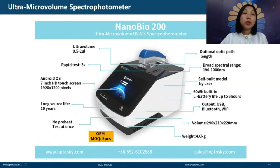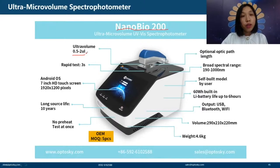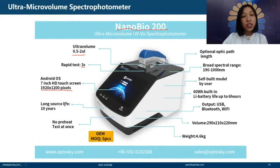Optosky also has the NanoBio-200 ultra-micro-volume spectrometer. It requires only 0.5 to 2 microliters of liquid sample. Detection speed is very fast — just 3 seconds. It features a large display screen, a lamp lifetime of 10 years, and is available for OEM production.